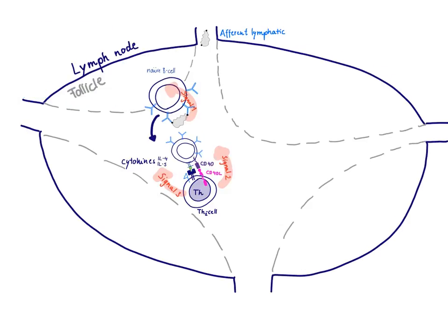Once the B-cell has found a T-helper cell that is going to recognize the peptide via its T-cell receptor, it's able to get Signal 2. Signal 2 is the interaction between two proteins: CD40 and CD40 ligand.